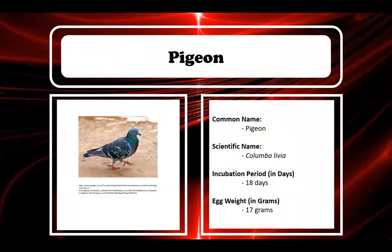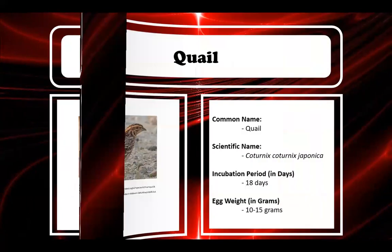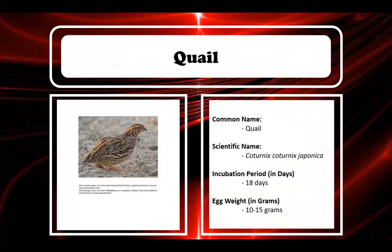Pigeon: scientific name Columba livia, incubation period 18 days, egg weight 17 grams. Next, quail: scientific name Coturnix coturnix japonica, incubation period 18 days, egg weight 10 to 15 grams.